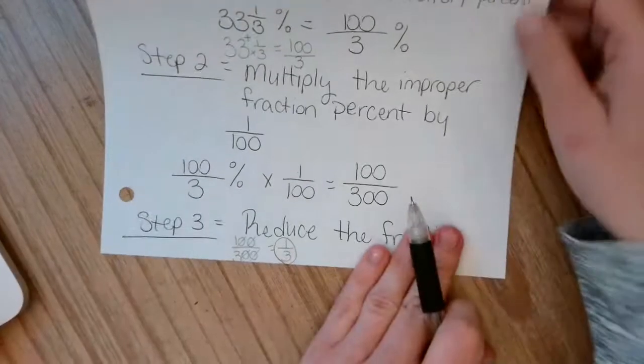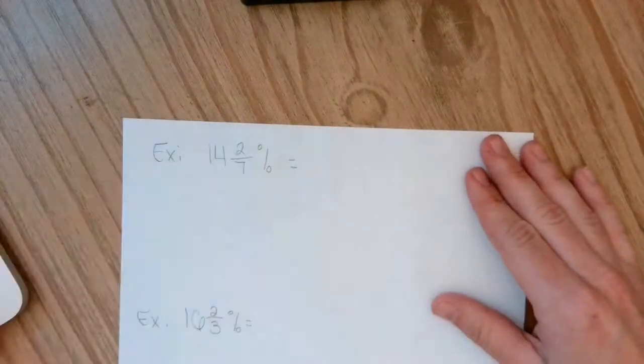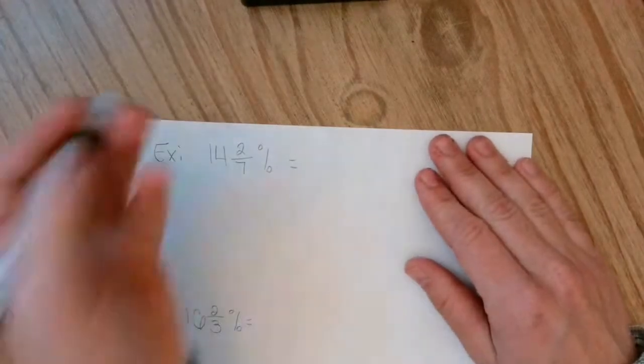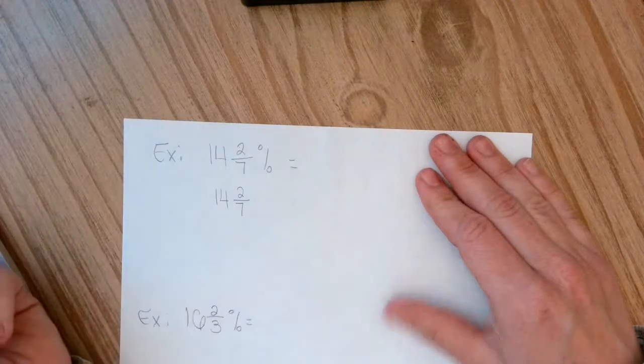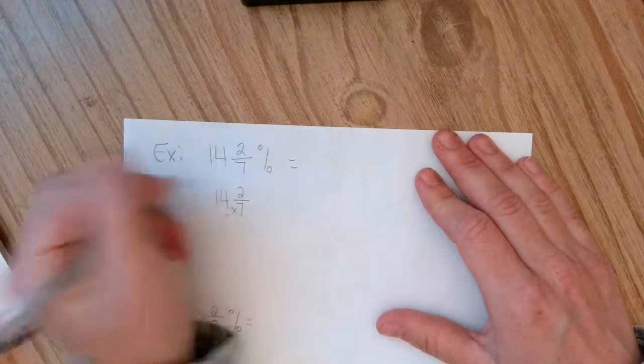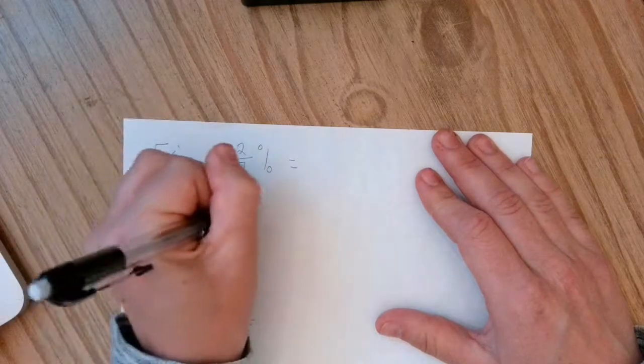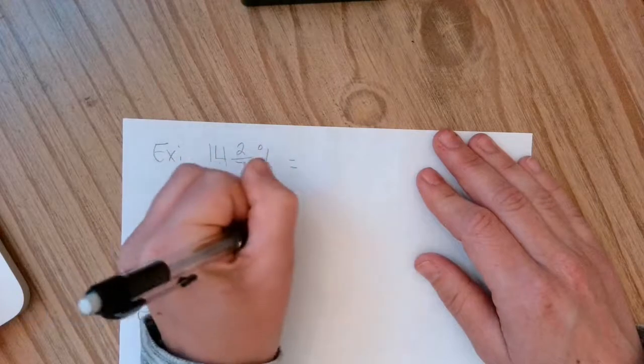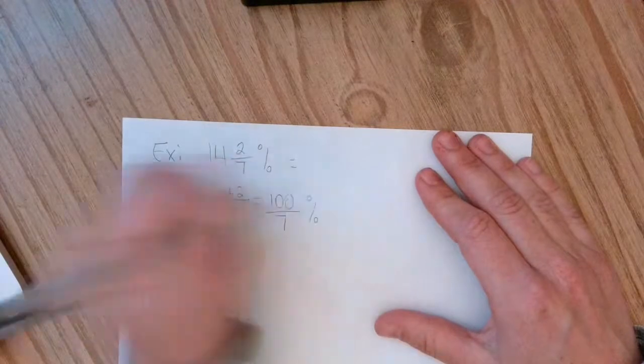So let's do two more examples together. So I have 14 and 2 sevenths, and this is actually a homework question. So first thing I'm going to do is change that into an improper fraction. So 7 times 14 plus 2 gives me 100 over 7. So that's your percent.